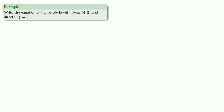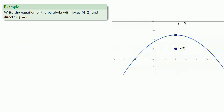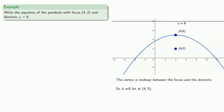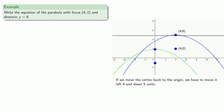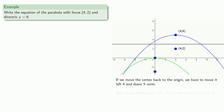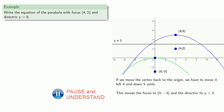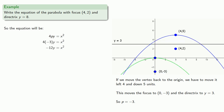Let's write the equation of a parabola with focus (4, 2) and directrix y equals 8. We start by graphing this information. The vertex is midway between the focus and the directrix, so it will be at (4, 5). If we move the vertex back to the origin, we move it left 4 and down 5. This moves both the focus and the directrix: the focus moves to (0, −3) and the directrix moves to y equals 3. This tells us that p is equal to negative 3, and our equation becomes 4(−3)y equals x squared.